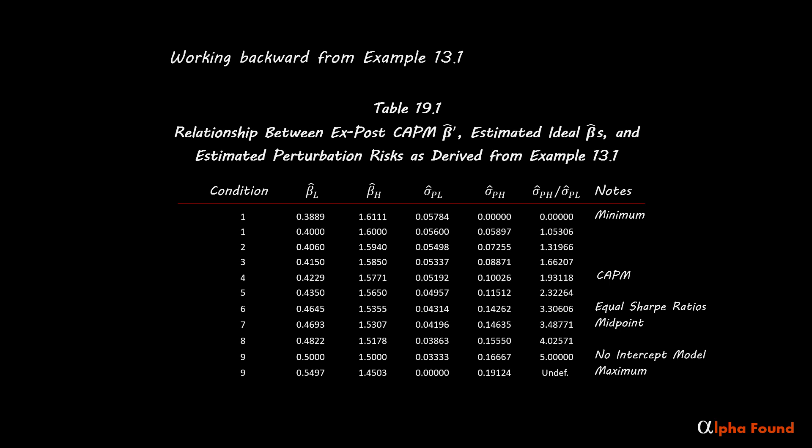By inspection of Table 19.1, it takes only a small change in the estimated perturbation risks to generate a meaningful change in the relationship between expected Sharpe ratios. It would not take much for such a change to occur in the market.